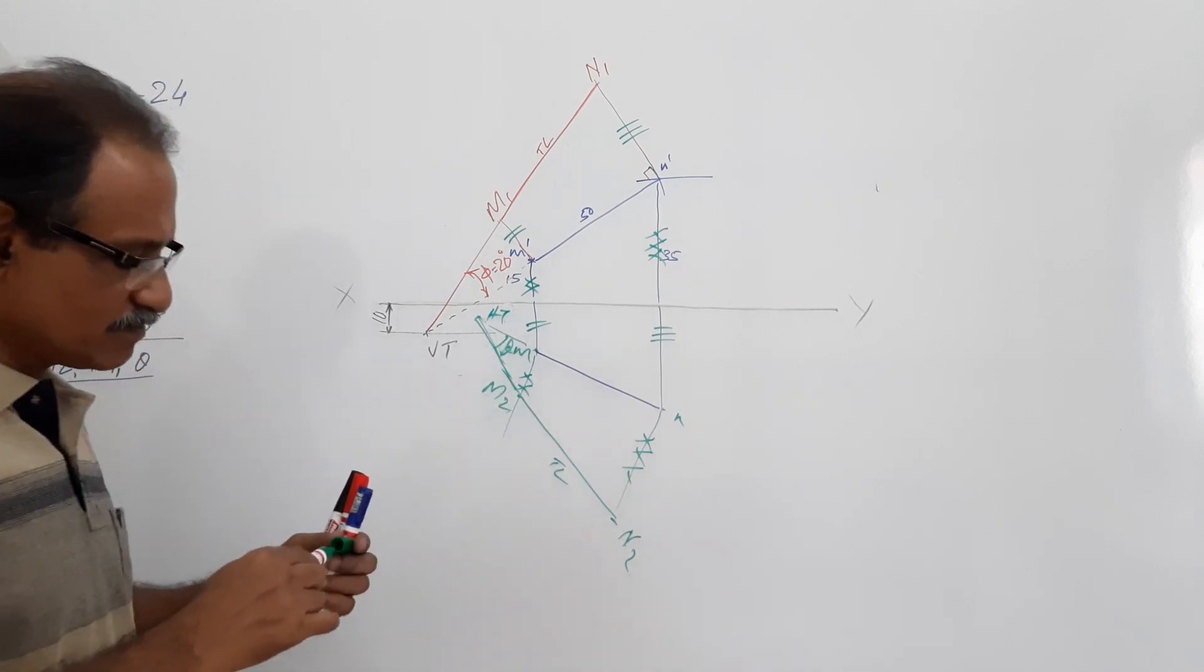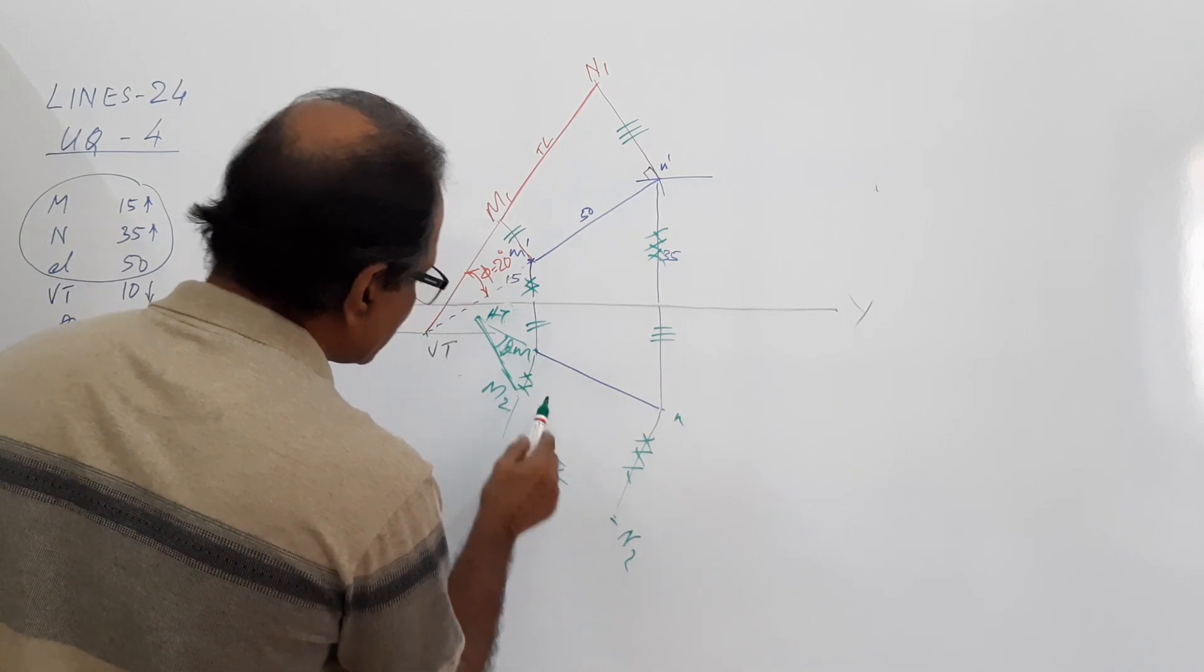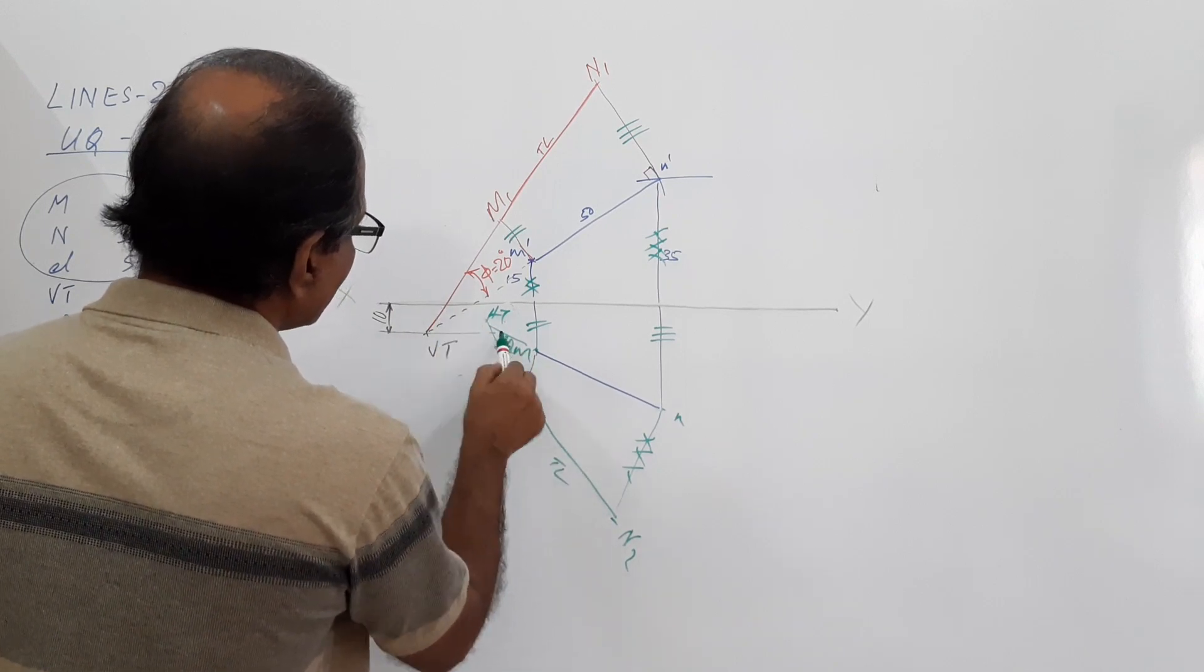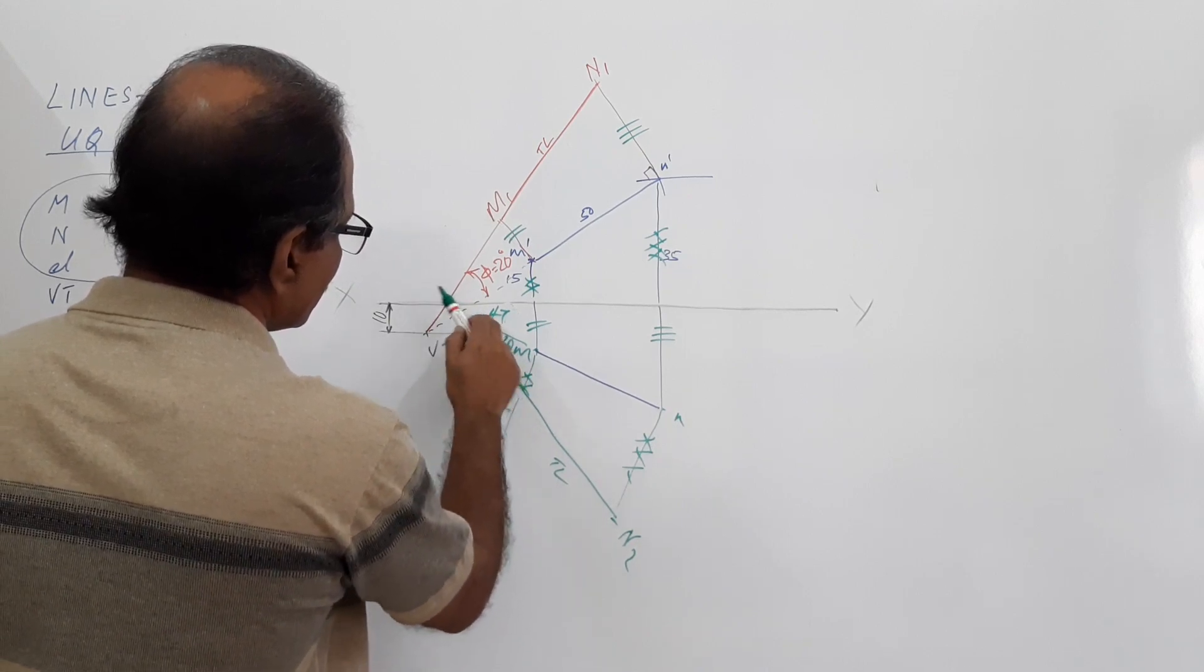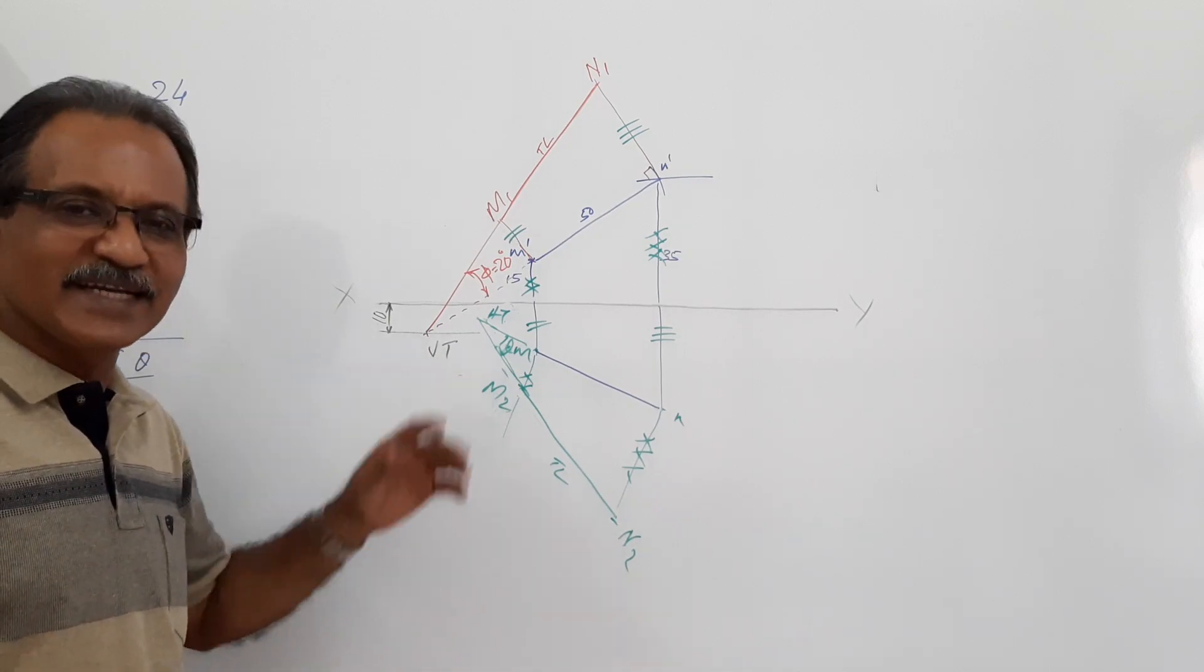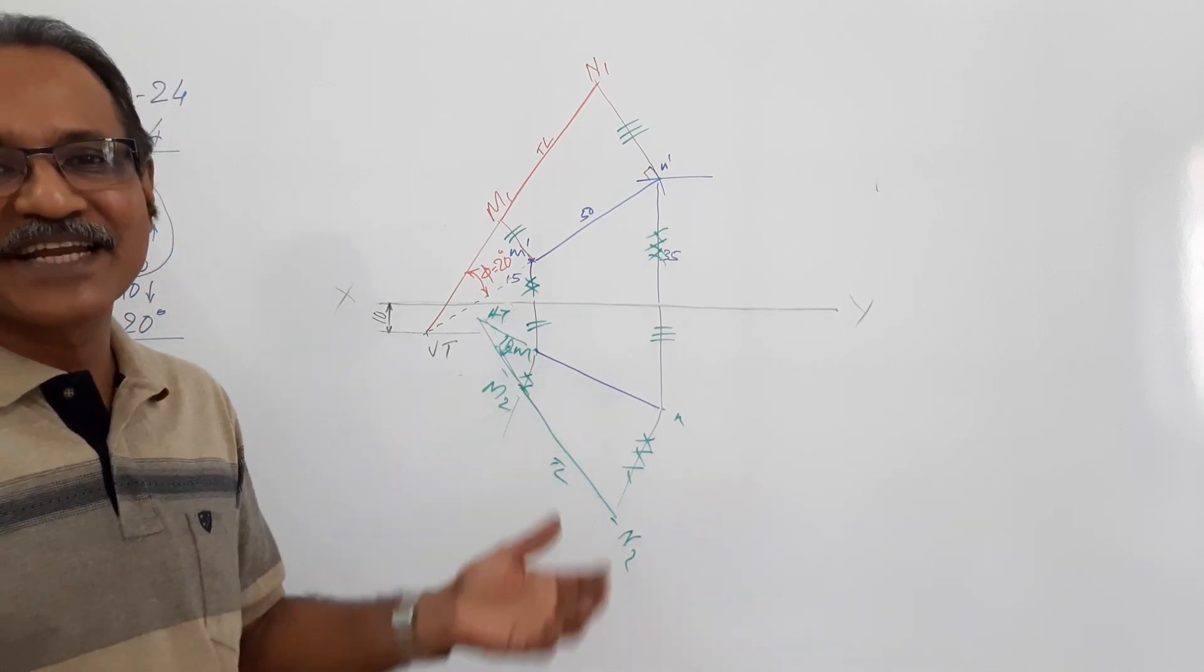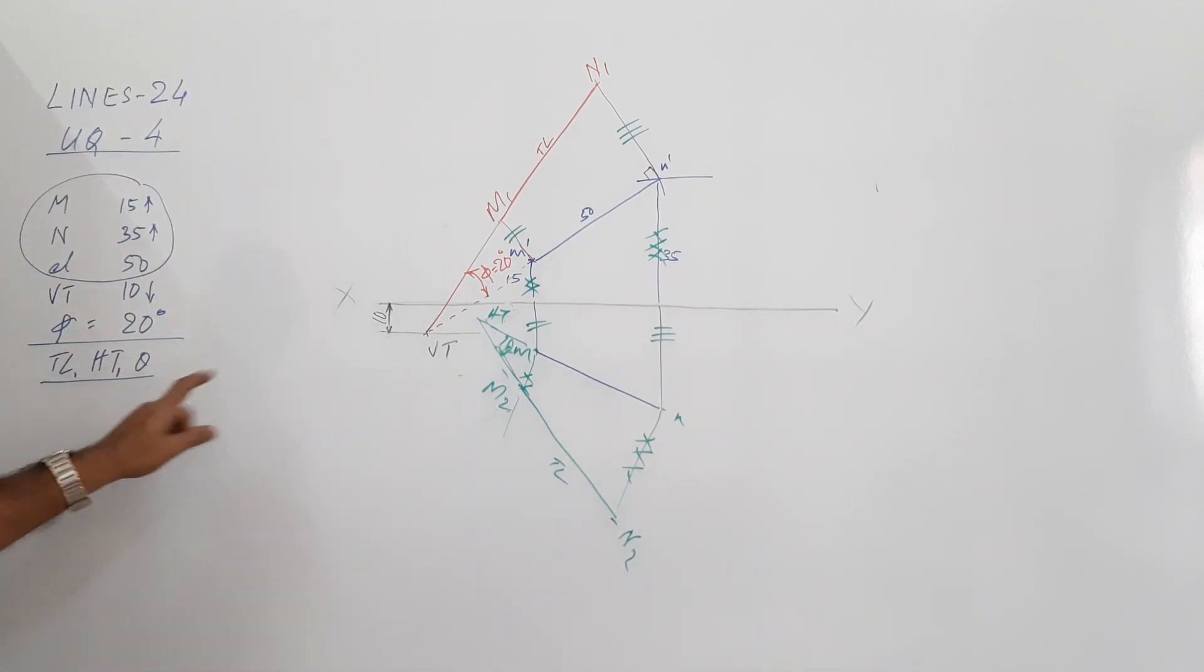You know the procedure. The problem is this is too much - it should have come here. That's why the projection is not coming properly. Since you are not following dimensions, there is the probability that it deviates. But I will try my level best. I've been doing it for three and a half decades now. The solution is over - you have got true length, HT and theta.